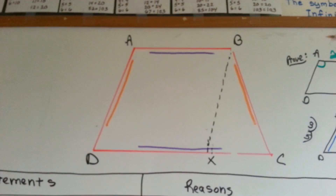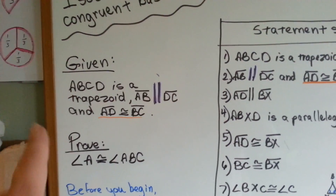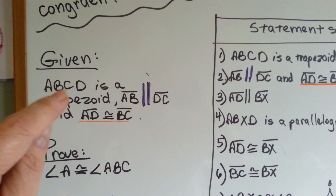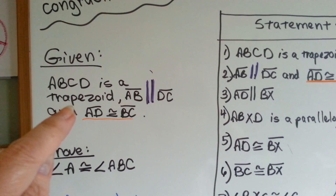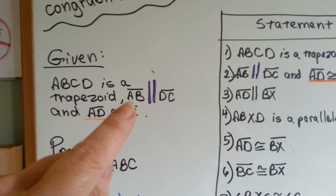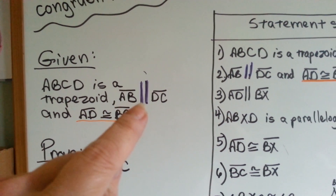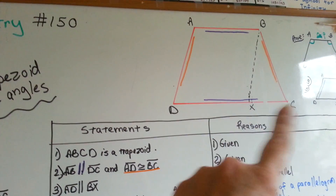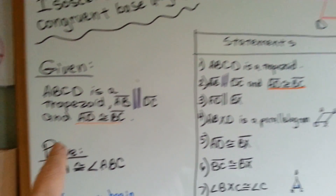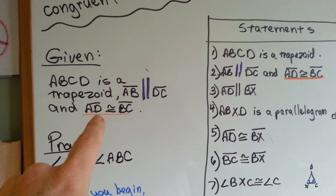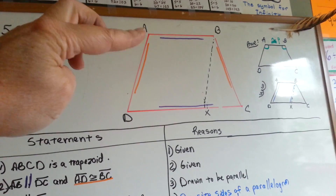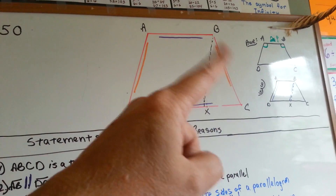Let's take a look at the drawing, then the given. The given says that ABCD is a trapezoid. It is a trapezoid. That line AB is parallel to DC. And that line AD is congruent to BC.